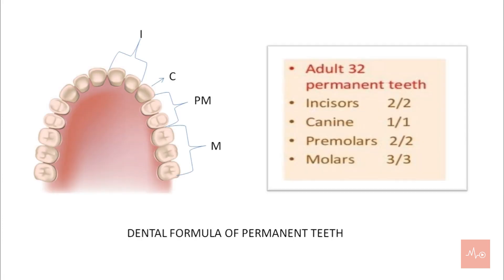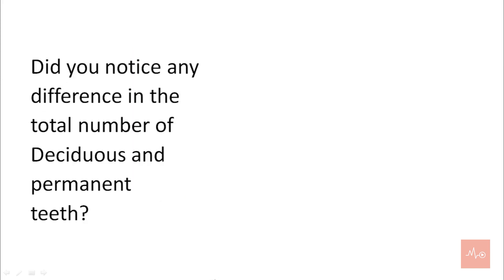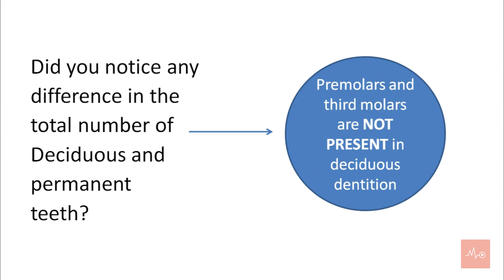Moving on to the dental formula of the permanent teeth. Adults have 32 permanent teeth: two incisors, one canine, two premolars and three molars. Did you notice any difference in the total number of deciduous and the permanent teeth? The premolars and the third molars are not present in the deciduous dentition.